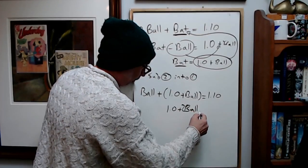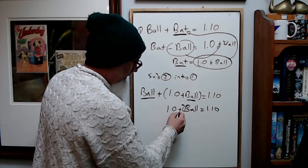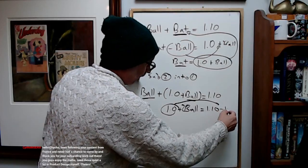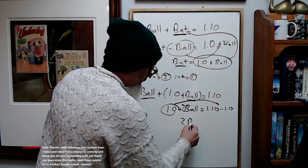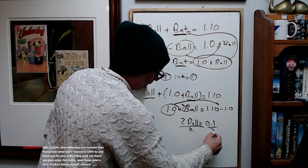So this becomes 1.0 plus two balls equals 1.10, because a ball plus a ball is two balls. Bring this over: minus 1.0. So two balls equals 0.10, then divide by two.